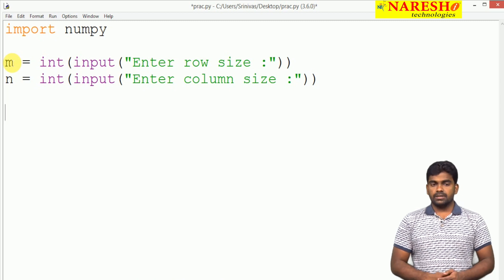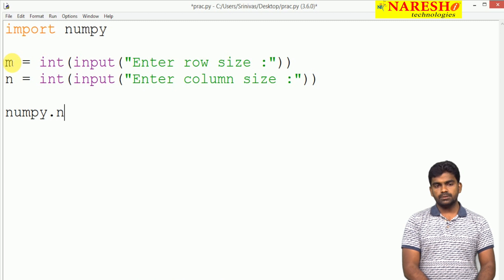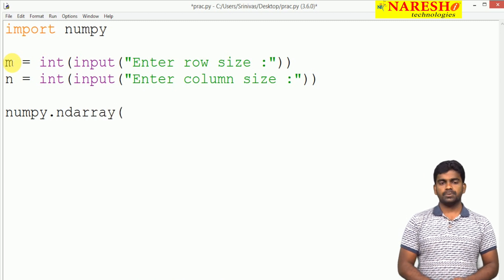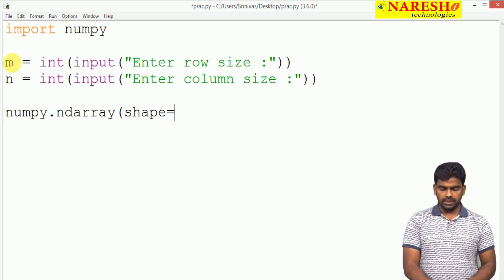And then here we are constructing. In the numpy module there is a predefined object called ndarray. It is expecting two things: first one is shape, and it is a tuple. We need to specify the row value and the column value.